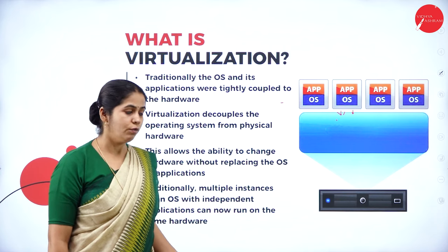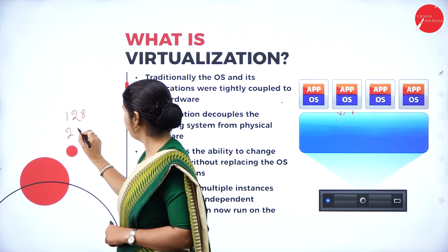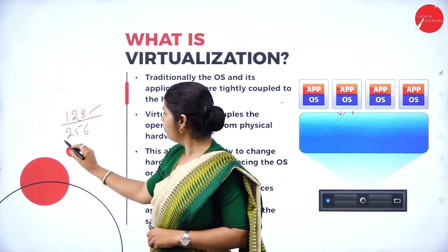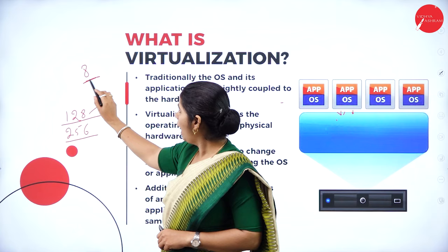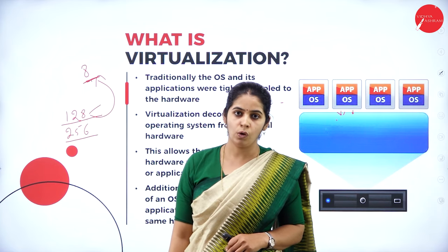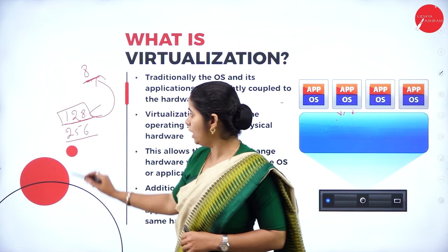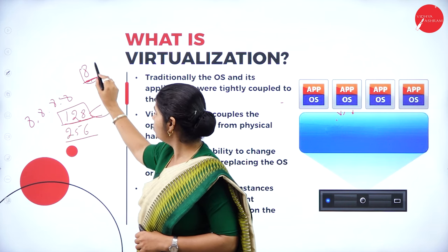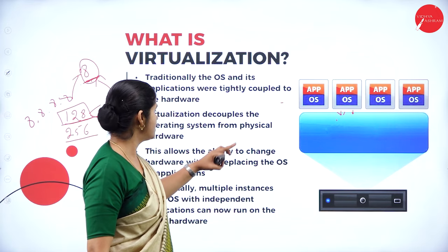For example, if one person has a 128 GB phone and another has only 8 GB, in a tightly coupled system you cannot transfer memory between them. Virtualization would pool all the memory together and allocate only what each person requires — that is called decoupling. This allows the ability to change hardware without replacing the operating system or application.